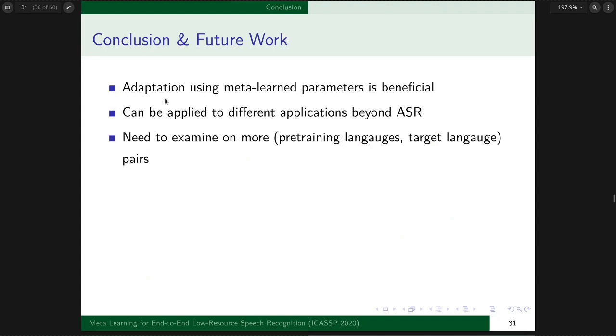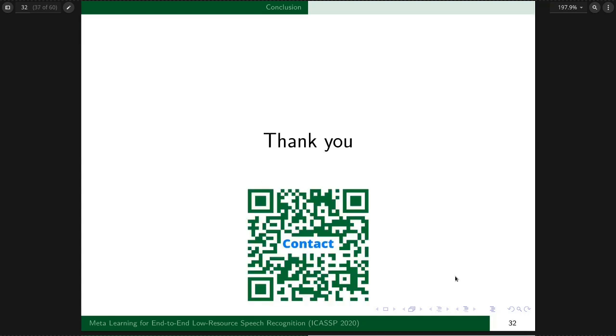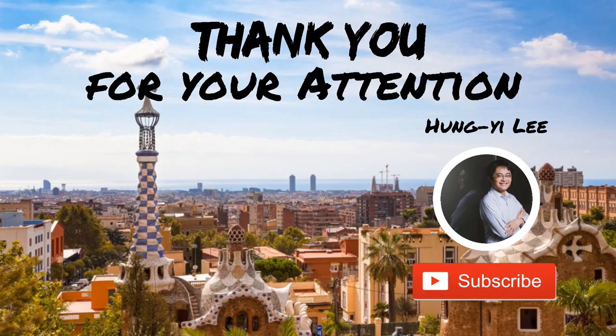In conclusion, from the two metrics mentioned, adaptation using meta-learned parameters is beneficial. Such technique can be applied to different applications beyond speech recognition, like text-to-speech or voice conversion. We still need to examine more pre-training and target language pairs to improve robustness. Thank you for your listening. You can scan the QR code to contact me.